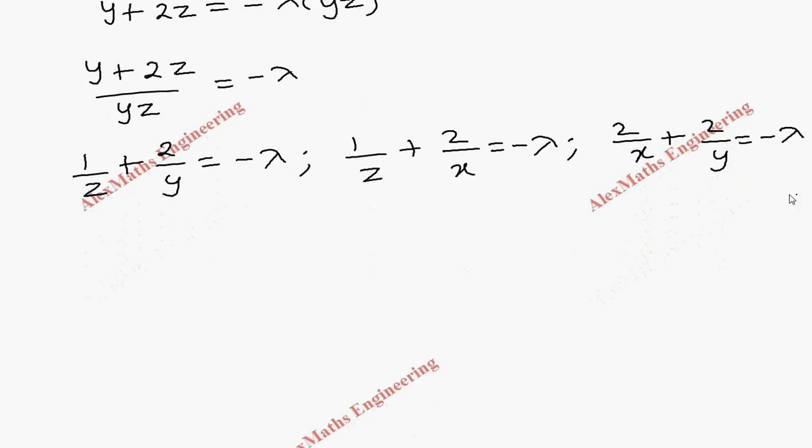Since all three are -λ, let's equate the first and second. Therefore 1/z + 2/y = 1/z + 2/x. So we can cancel 1/z on both sides. We're left with 2/y = 2/x. By taking reciprocal, that is after canceling these two, we get y = x.